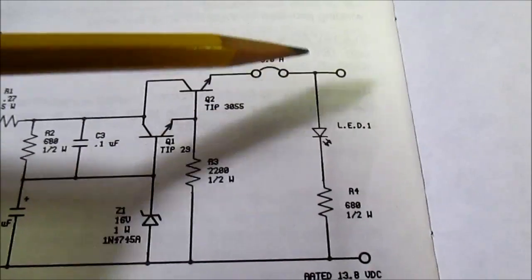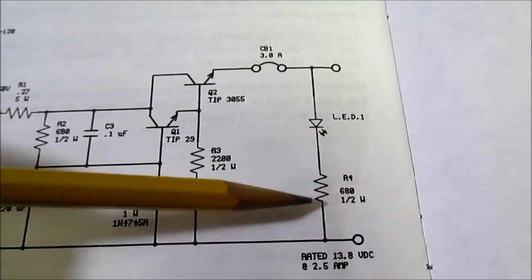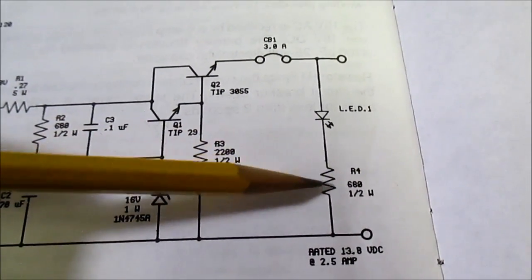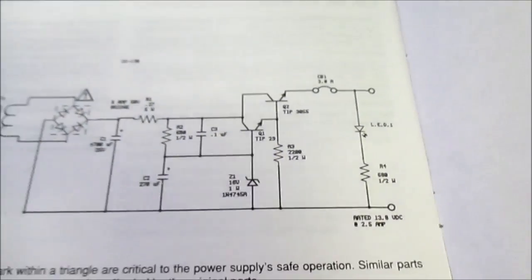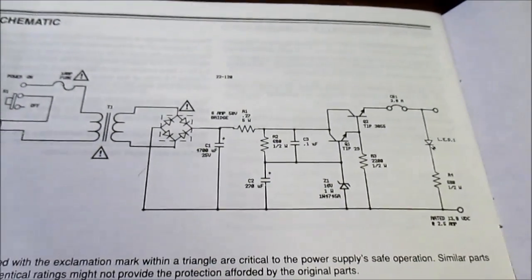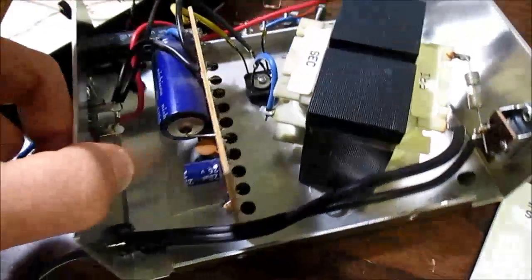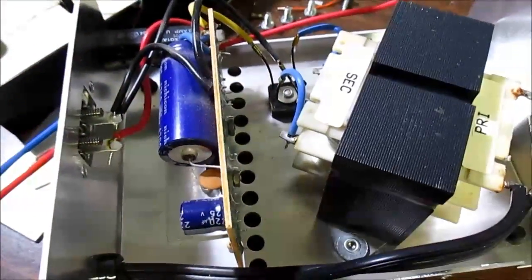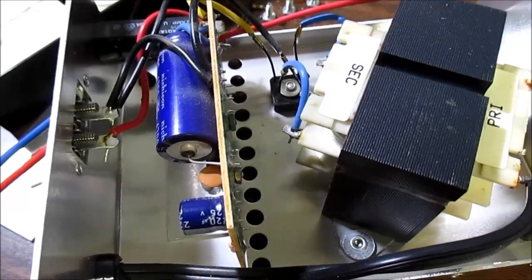And of course there's the breaker and the LED indicator with the current limit resistor. So that's in a nutshell the very basic regulator circuit in this thing. So now let's hook it up and take some measurements.